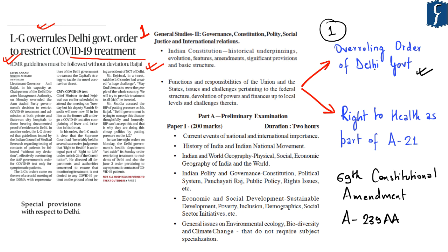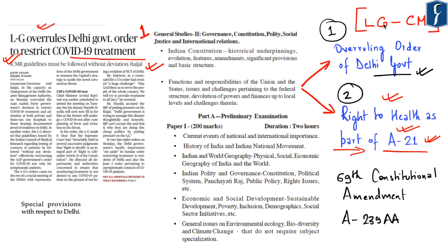From our UPSC perspective, this news highlights two important aspects. First, the Delhi LG has overruled the order of the Delhi government, citing Article 21 of the Indian constitution, stating that right to health is also a part of right to life and personal liberty under Article 21 — a very important fundamental right. This topic is important especially with respect to constitutional provisions regarding relations between the LG of Delhi and the Chief Minister of Delhi.